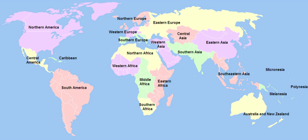Oceania — see also UN Geoscheme for Oceania. Subregions include Australia and New Zealand, Melanesia, Micronesia, and Polynesia.